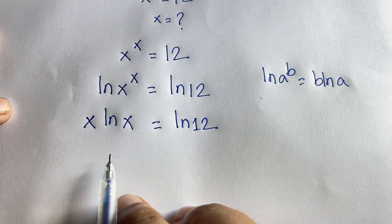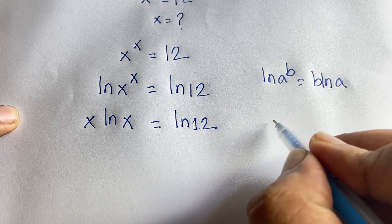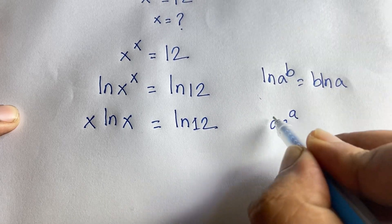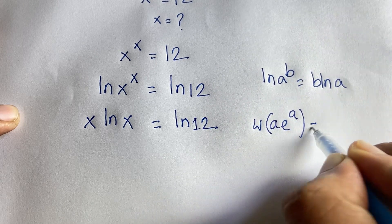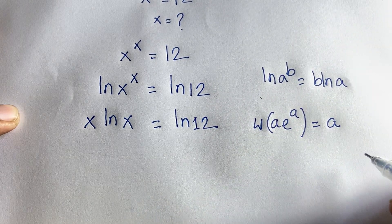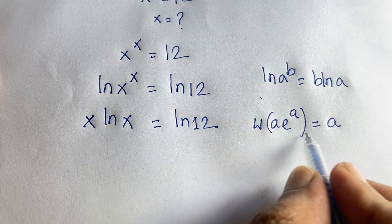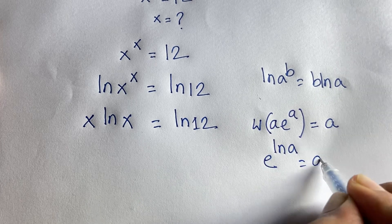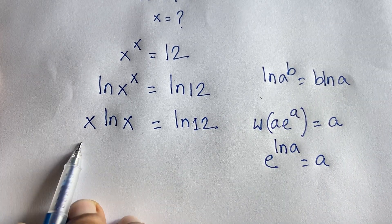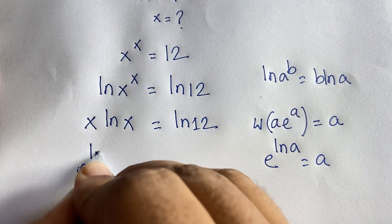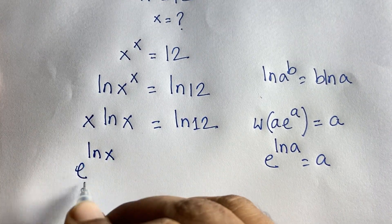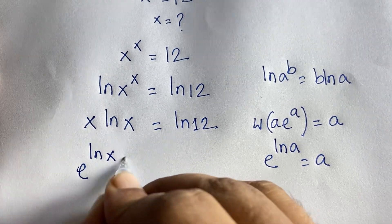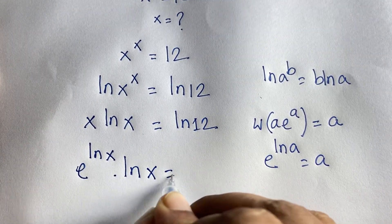Now I want to use the Lambert W function. The Lambert W function deals with expressions of the form a·e^a. We know that e^(ln a) = a, so x can be written as e^(ln x). Substituting, we get e^(ln x) · ln(x) = ln(12).